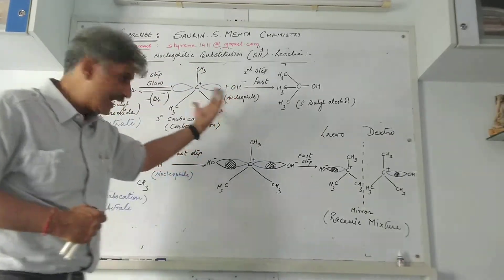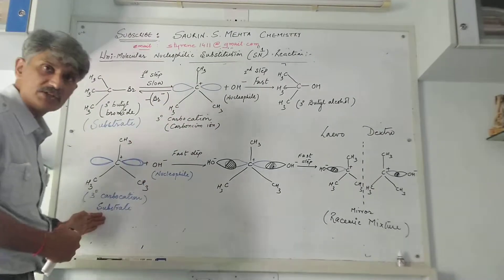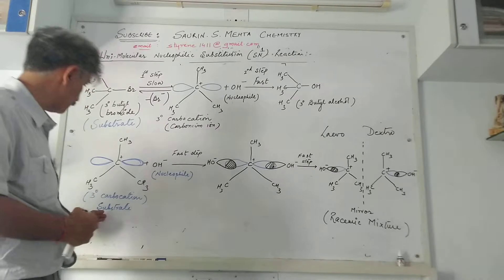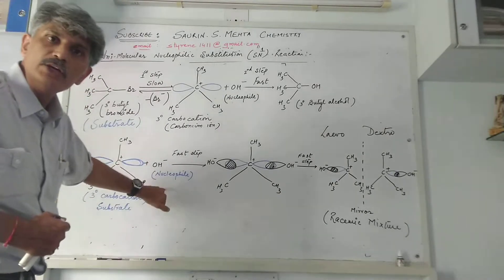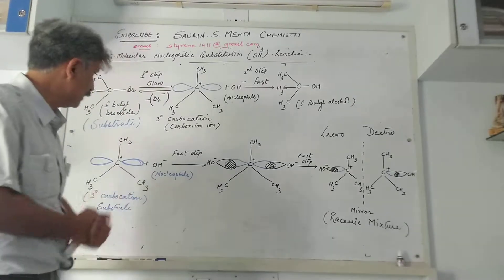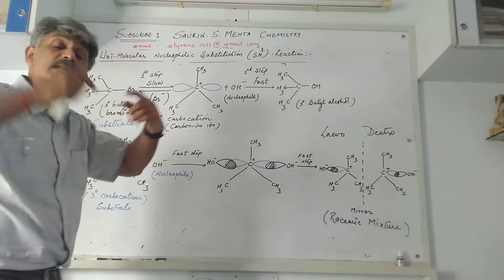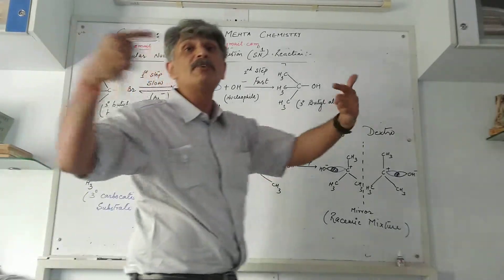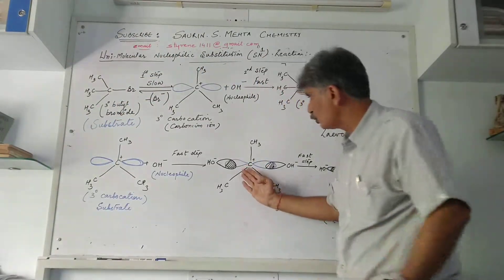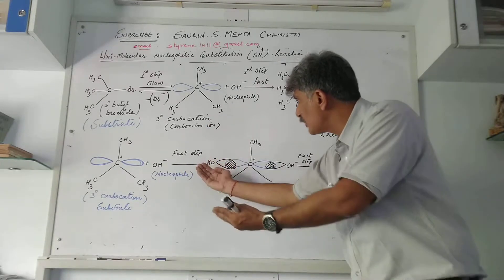I have taken the same tertiary carbocation substrate and allowed the nucleophile to attack that carbon with the plus sign. This is a fast step - OH minus attacks the carbon from both sides. The OH minus with its dense electron cloud attacks from front side and also from the rear side.